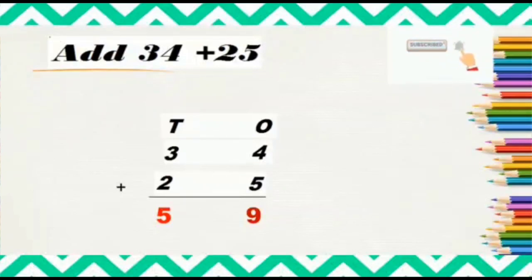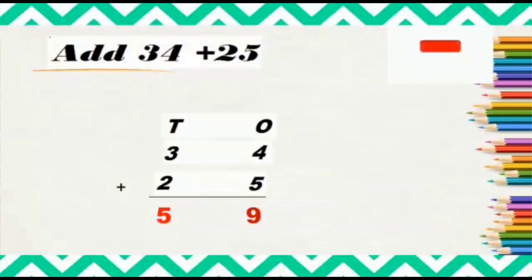When we add two numbers, the answer we get is called the sum or total. So 59 is the total of 34 plus 25.